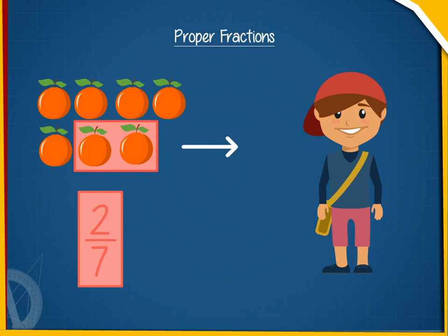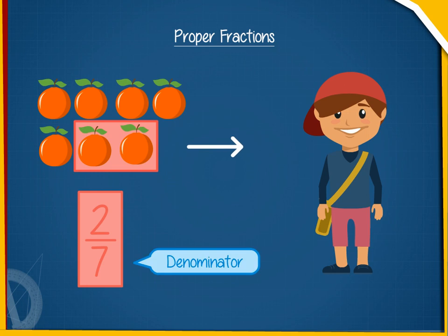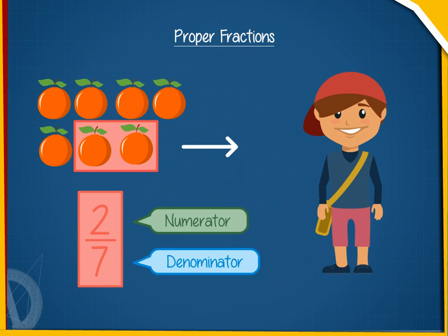When we talk of fractions, we can say that the denominator defines the total number of objects we have, and the numerator tells the number of objects we are going to use from the total objects.